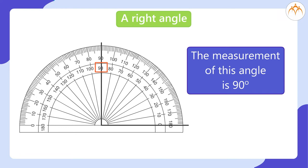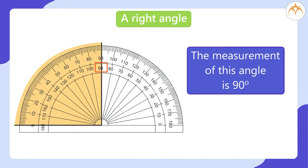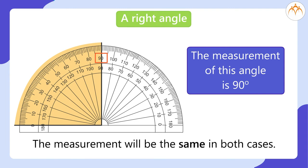The angle is open from the right side, so you can read the measurement from the right side of the midline of the protractor. If the same angle is open from the left side, then you can read the measurement from the left side of the midline of the protractor. The measurement will be the same in both cases.